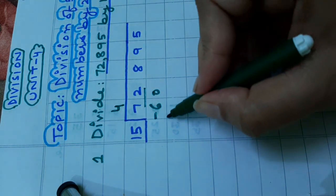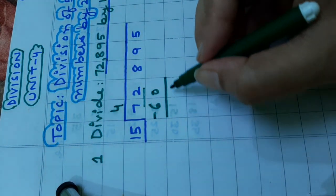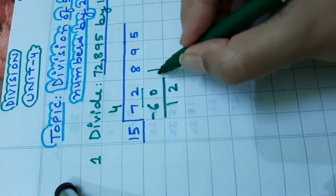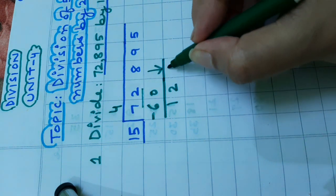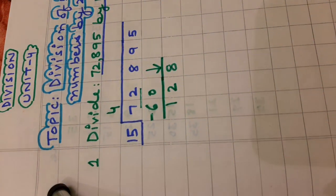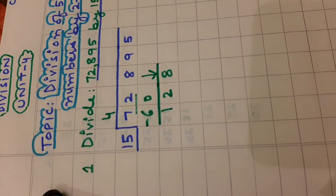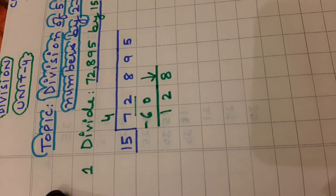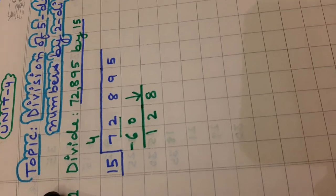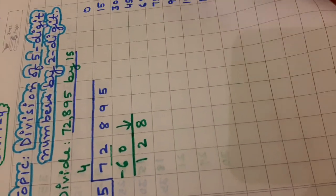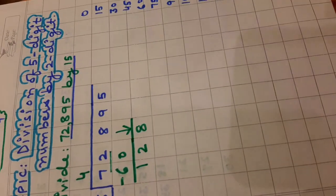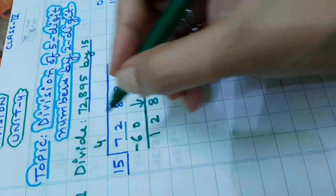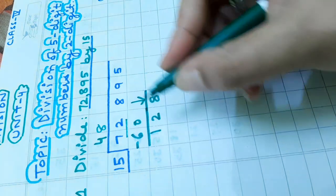72 minus 60 is 12. 2 minus 0 is 2, 1. Let us copy 8 and it will become 128. Now we will find a number equal to 128 or less than 128 or nearer to 128 in the table of 15. That number is 120. 15 eights are 120.